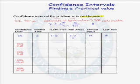Now let's do a couple of problems where we find our critical value t-star for several t-confidence intervals. Let's start with a 90% confidence interval, and suppose our sample size was 3. So the degrees of freedom we will use are 2.